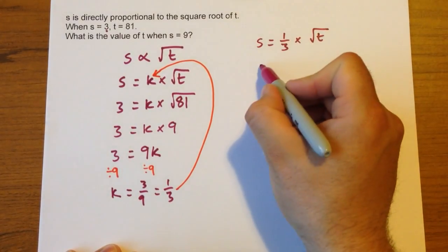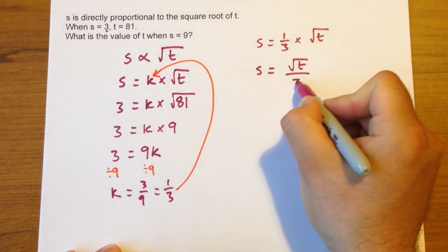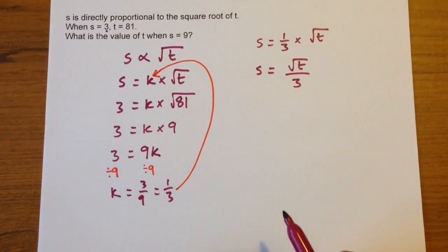So we've got s equals one third multiplied by root t. And the way I would write that, I would write it as s equals root t over 3. And that means exactly the same thing. It's just more convenient sometimes to write it like that.